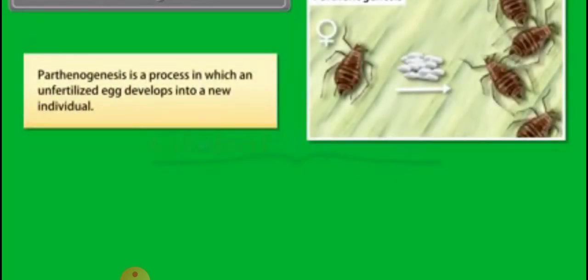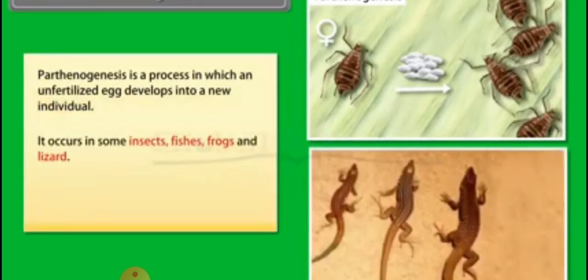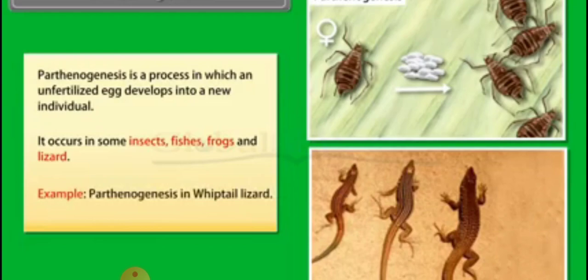Parthenogenesis is the process in which an unfertilized egg develops into a new individual. There is no mating between the male and the female gametes. It is observed in some insects, fishes, frogs and lizards, also in whiptail lizards.